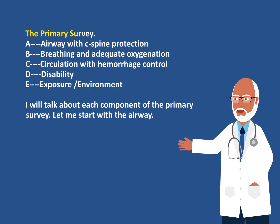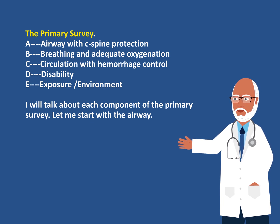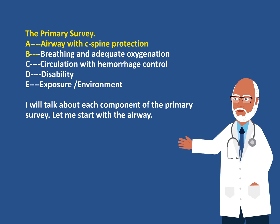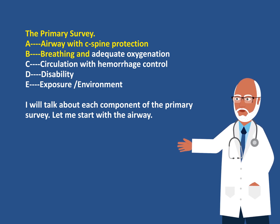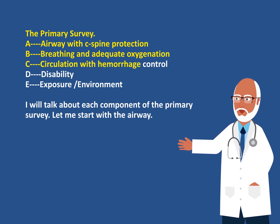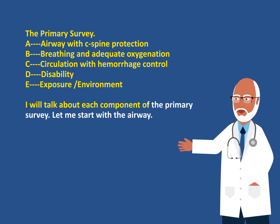The primary survey. We talk about A, B, C, D, and E. A involves airway with C-spine protection. B involves breathing and adequate oxygenation. C involves circulation with hemorrhage control. D is disability. And E involves exposure and environment. I will talk about each component of the primary survey.